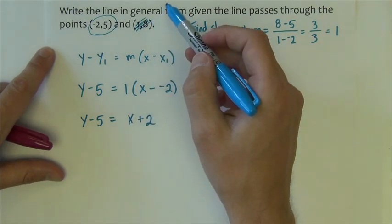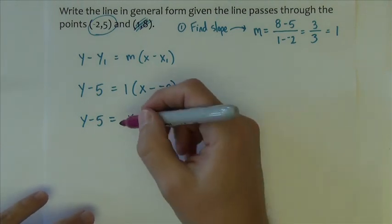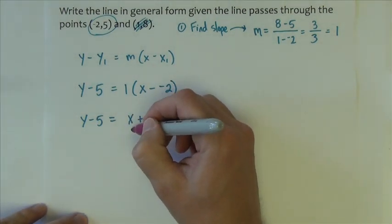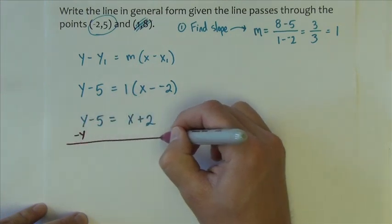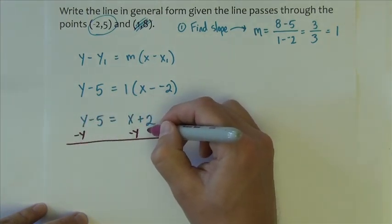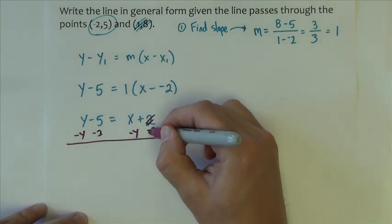Now remember, to get into general form, I want no fractions. Right now I have no fractions. That's a good thing, so I don't have to deal with that. The other thing I want is variables on the same side, x to be positive. The x is already positive here, so I need to bring this y over, I need to bring this 2 across.